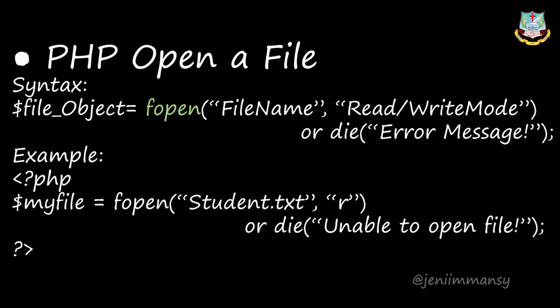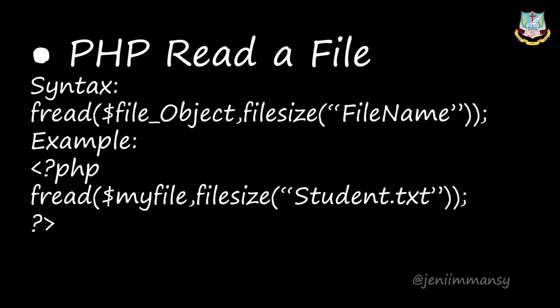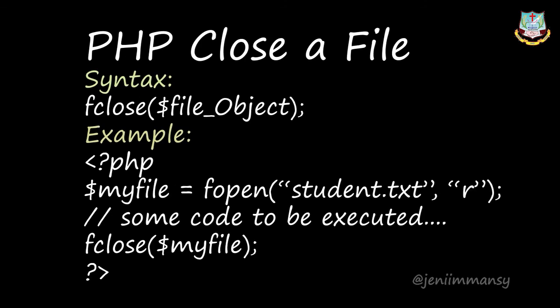PHP read a file: we use the fread function. The syntax is fread inside the bracket — dollar file object, comma, filesize with the file name inside double quotes in a nested bracket, then close both brackets and end with a semicolon. Example: fread(dollar my file, filesize('student.txt')), ending with semicolon and the closing PHP tag.